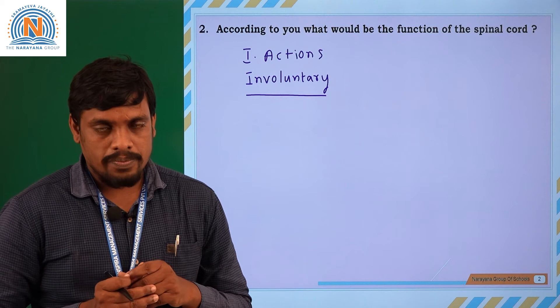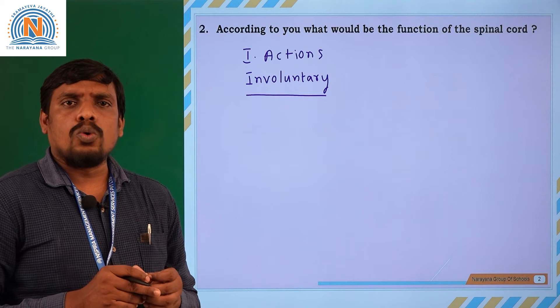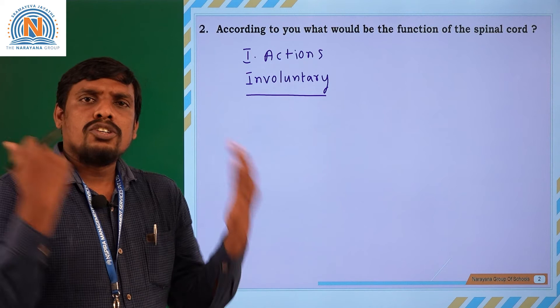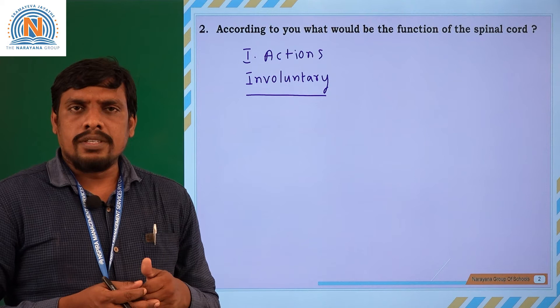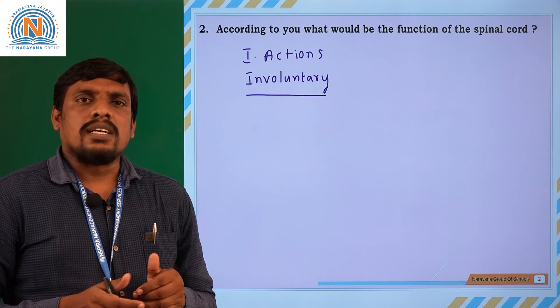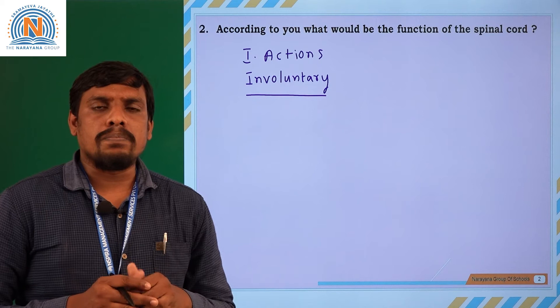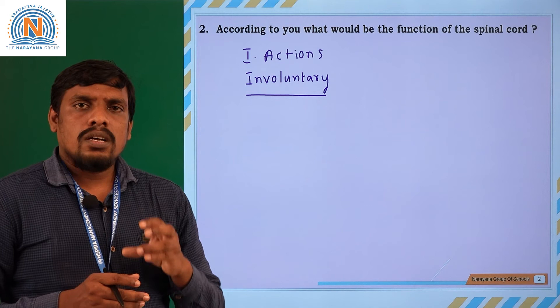All involuntary actions are regulated, monitored, and controlled by the spinal cord. For example, suddenly falling down while playing cricket or football is an unknown movement. Stepping on a sharpened nail is also an unknown movement. Similarly, if somebody suddenly hits your back, you will turn around and look at that person. In this way, sudden actions are regulated and controlled by the spinal cord.